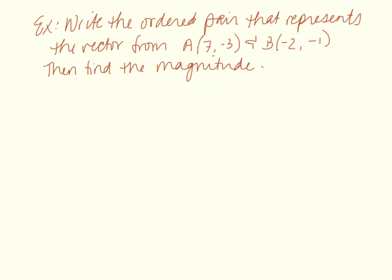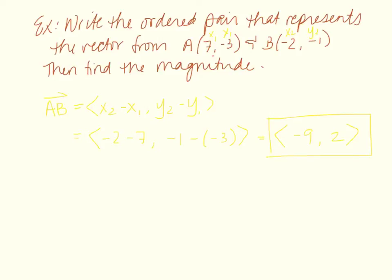Here's an example. Write the ordered pair that represents the vector from A(7, -3) to B(-2, -1), and find its magnitude. Vector AB equals x2 minus x1, y2 minus y1. So that's negative 2 minus 7, and negative 1 minus negative 3. Simplifying, I get negative 9 and positive 2. So the ordered pair that represents that vector is (-9, 2).